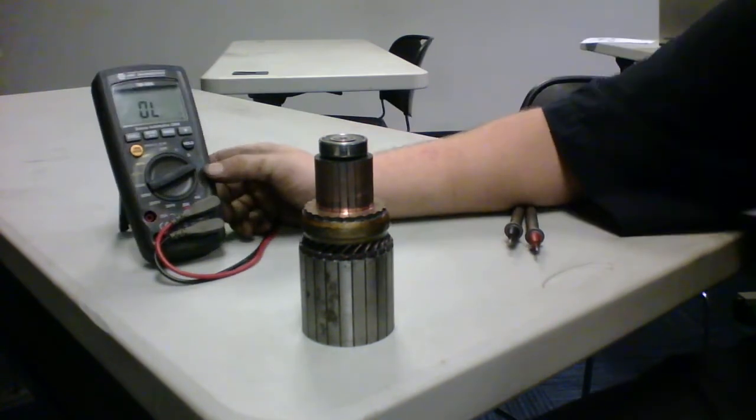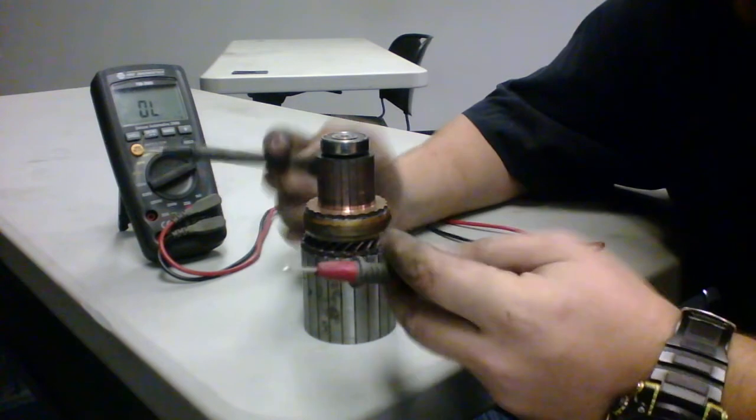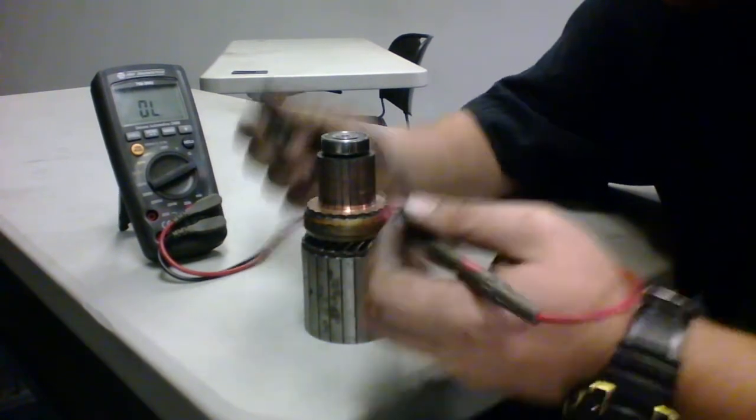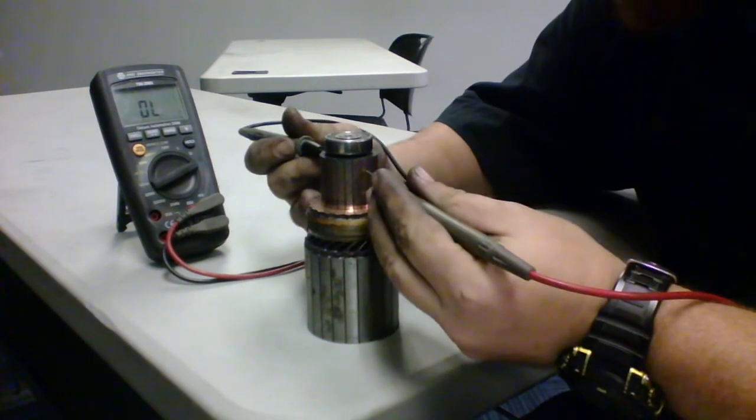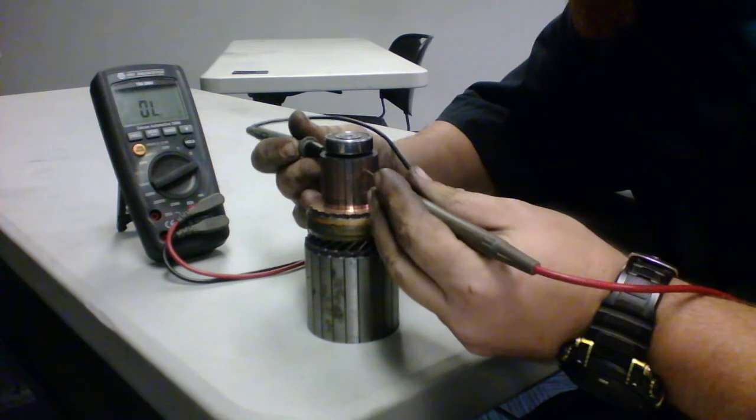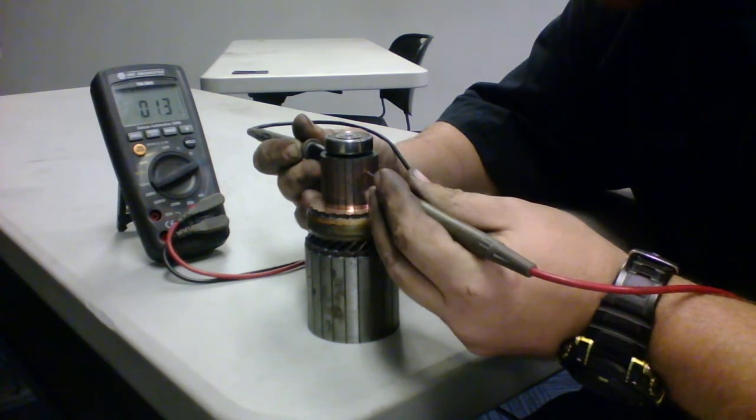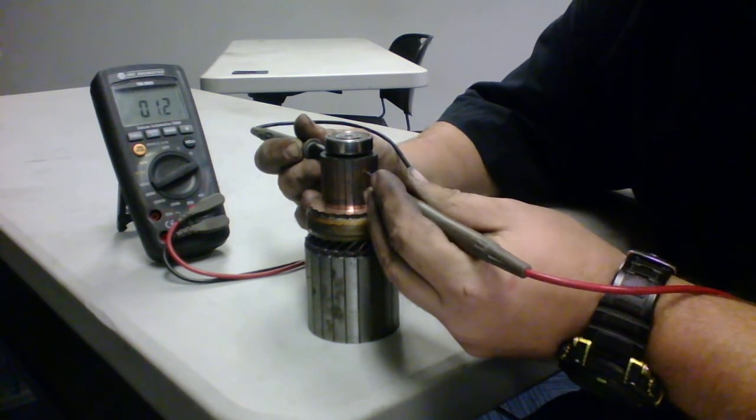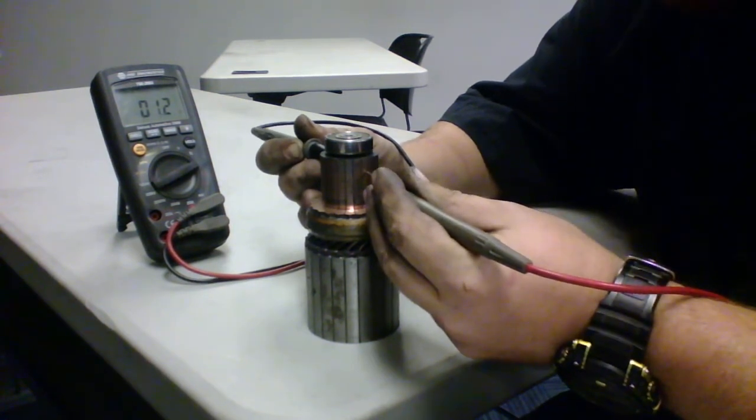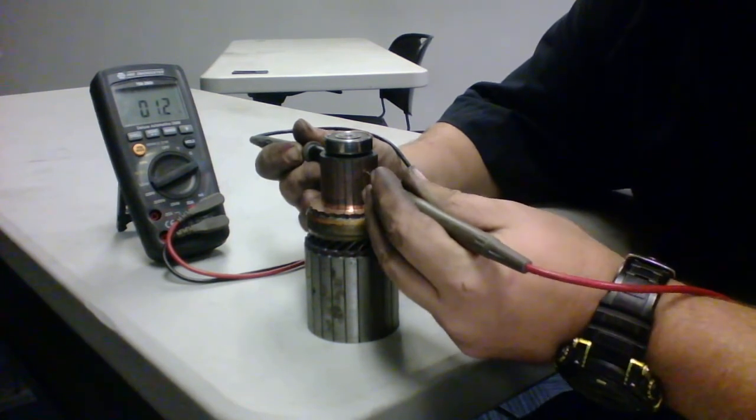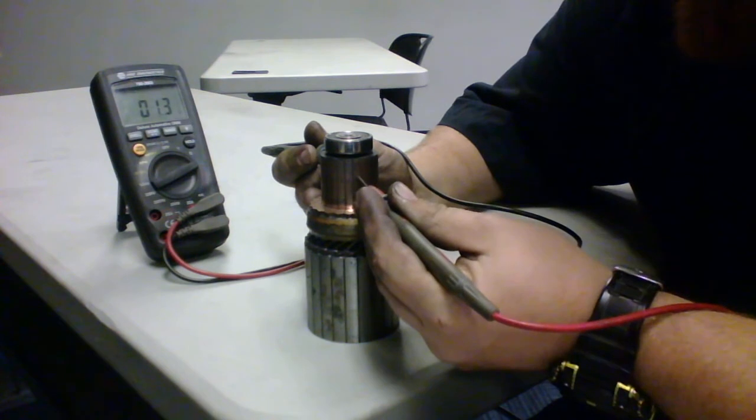We're going to use our continuity tester. We're going to take these two leads here, you got your positive and your negative. Our first test consists of running our testers 180 degrees out, so we're going to start here. As you can see, we've got fluctuating between 1.2 and 1.3. So 1.2 to 1.3 is what we're going to use all the way around. What we're looking for is consistency.